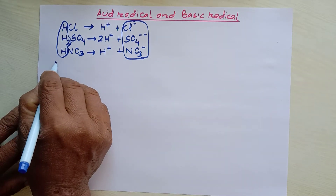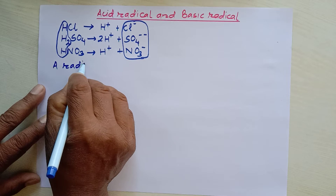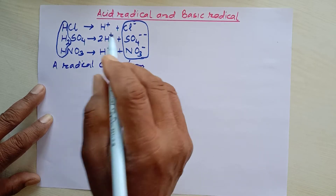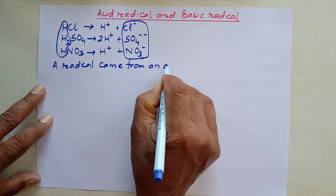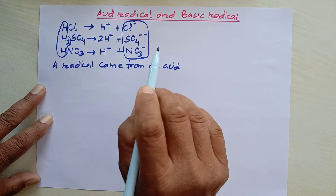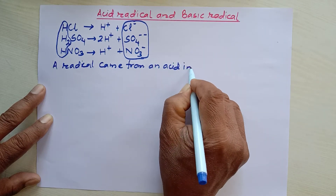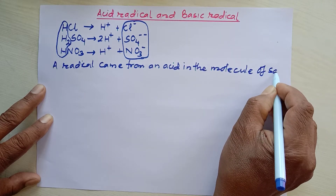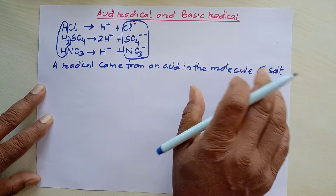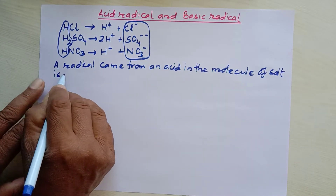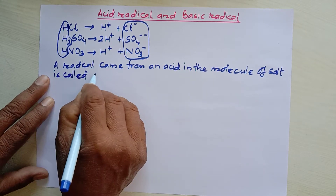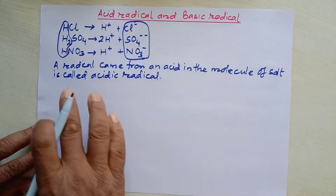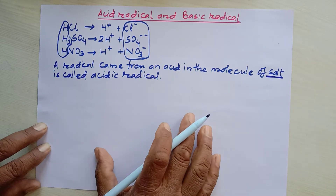Now we can identify acid radicals, and we can define them this way: a radical that came from an acid in the molecule of a salt is called an acid radical. This definition refers to salt as well.